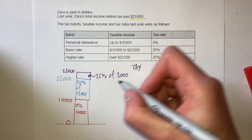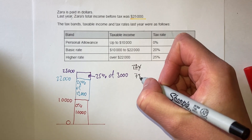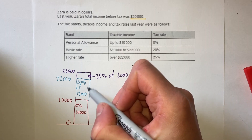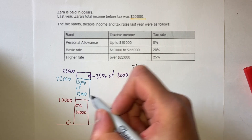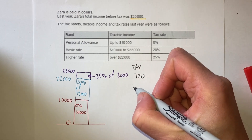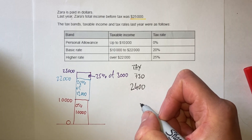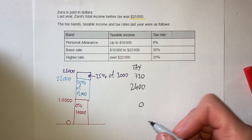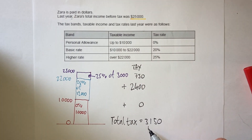I need 25% of $3,000. Half of $3,000 is $1,500, half again is $750. I need 20% of $12,000 for this section: 10% is $1,200, so 20% must be $2,400. Then zero percent of something is zero. If I add these up, I'll get the total tax that Zara needs to pay — $3,150.